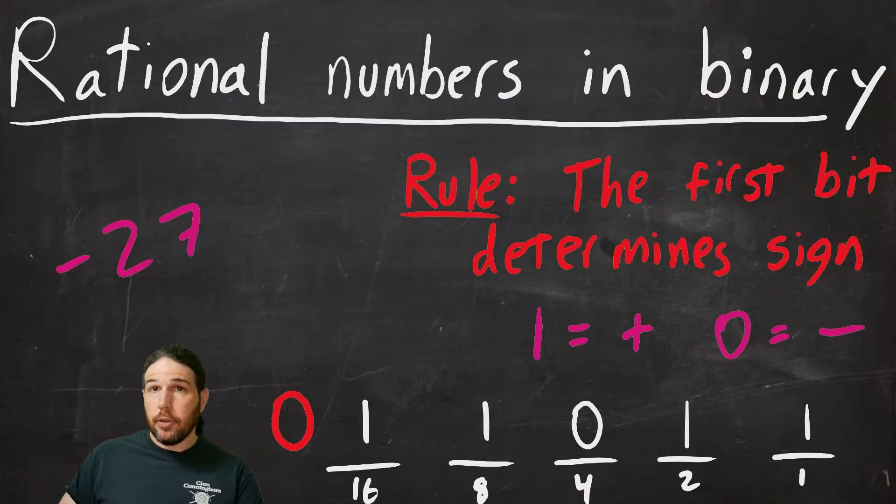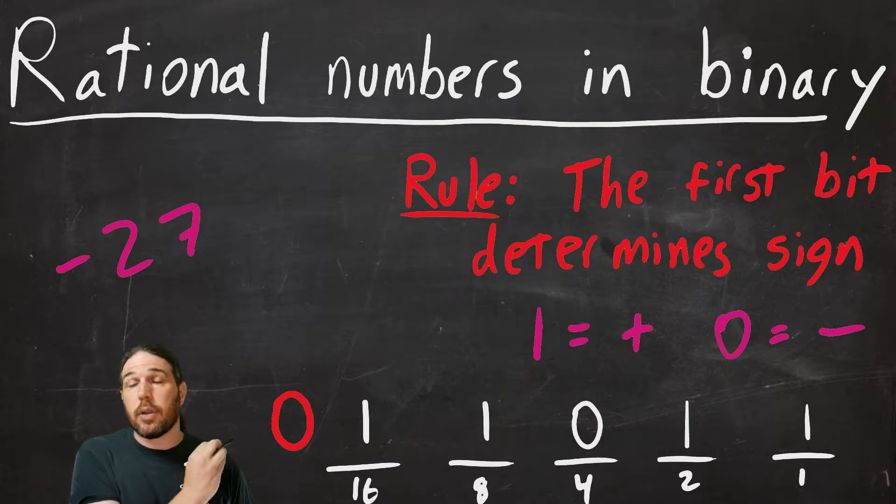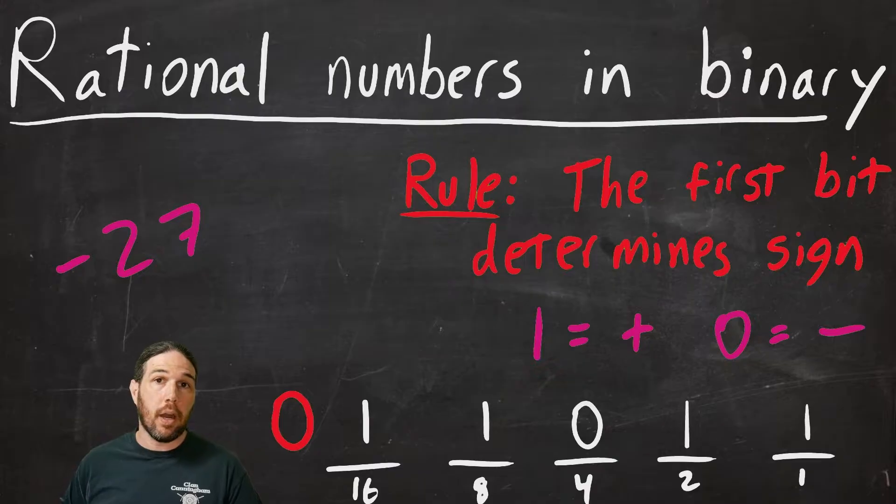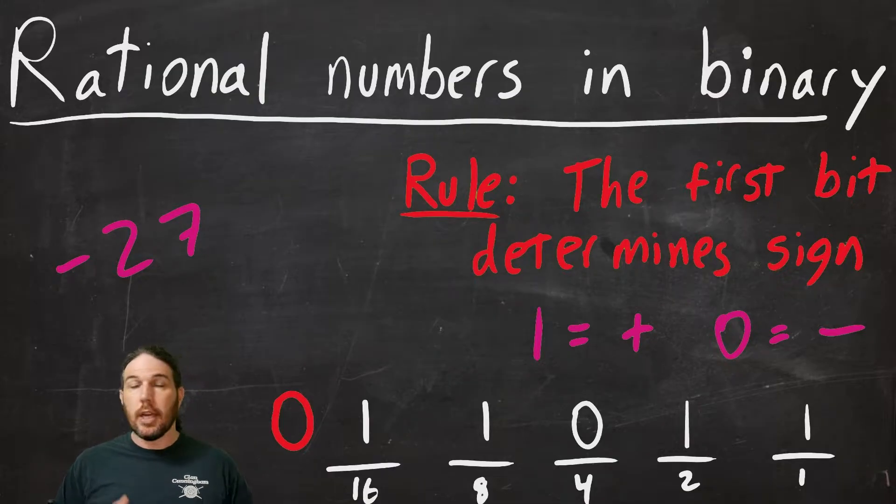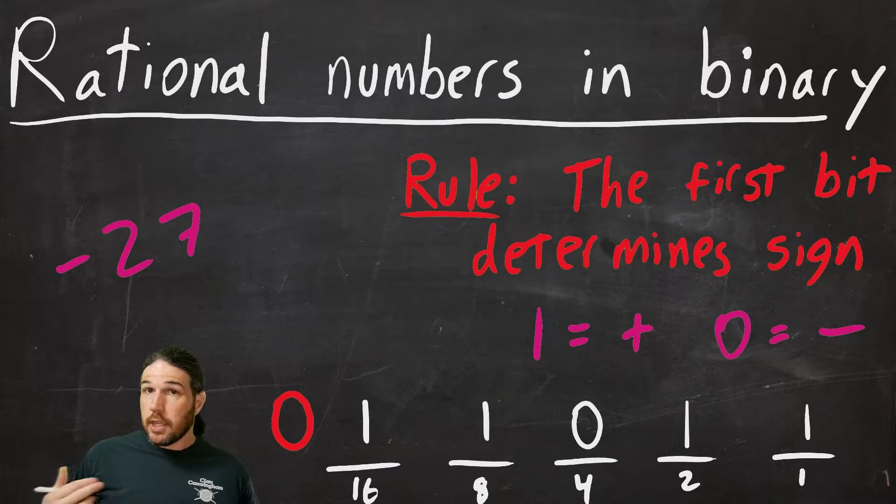Now, not all computers are going to read this zero as a negative sign. It depends on what computer you're working on, what language it's using, and what rules you've set. That's the part about computer science that's so confusing. Unlike math, a lot of these rules are not standardized across programming languages. You have to figure out what your programming language uses and go with that.